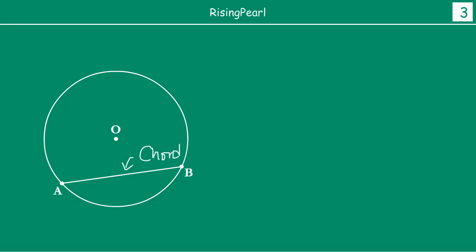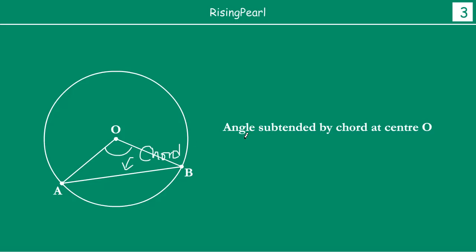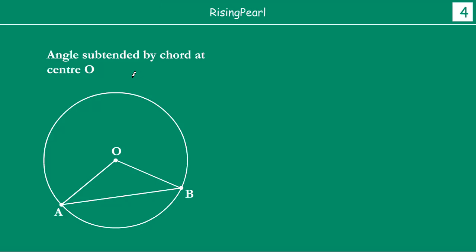So, what will be the answer, Dostho? Simply, aap kya karoge? Angle subtended by chord at center O will be nothing but — you will join AO and BO. So, yeh angle milegi, Dostho, this is what is meant by angle subtended by chord at center O. So, is particular chord ke liye, AB ke liye, the angle subtended by this chord at O will be nothing but — you join AO and BO. The measure of this angle is the angle subtended by AB at O. So, Dostho, we are clearly showing you the angle subtended by a chord at center — AB is our chord and O is the center of the circle. This is the angle that is subtended by chord AB at center O.